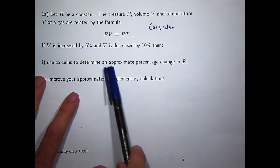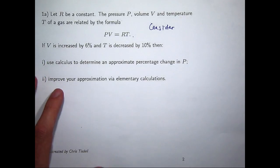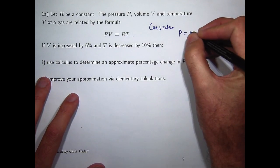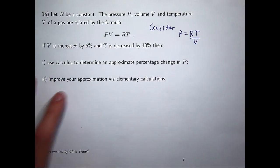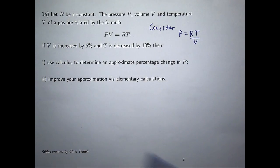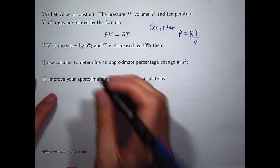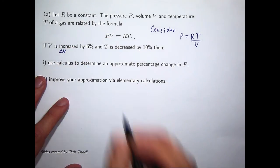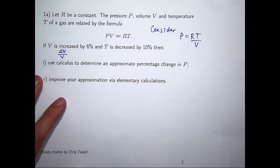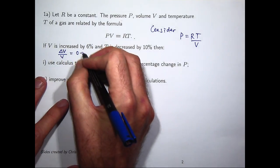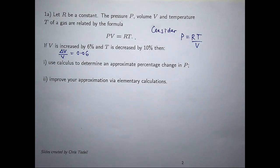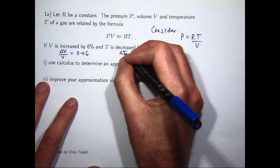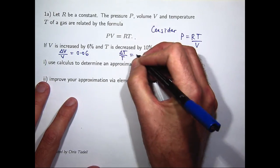We want to approximate the percentage change in p, so let's make p a function of t and v. Now v is increased by 6%, so let delta v represent the change in volume — this means delta v over v is 0.06. And the temperature is decreased by 10%, so let delta t be the change in temperature; we can summarise this as delta t over t is minus 0.1.